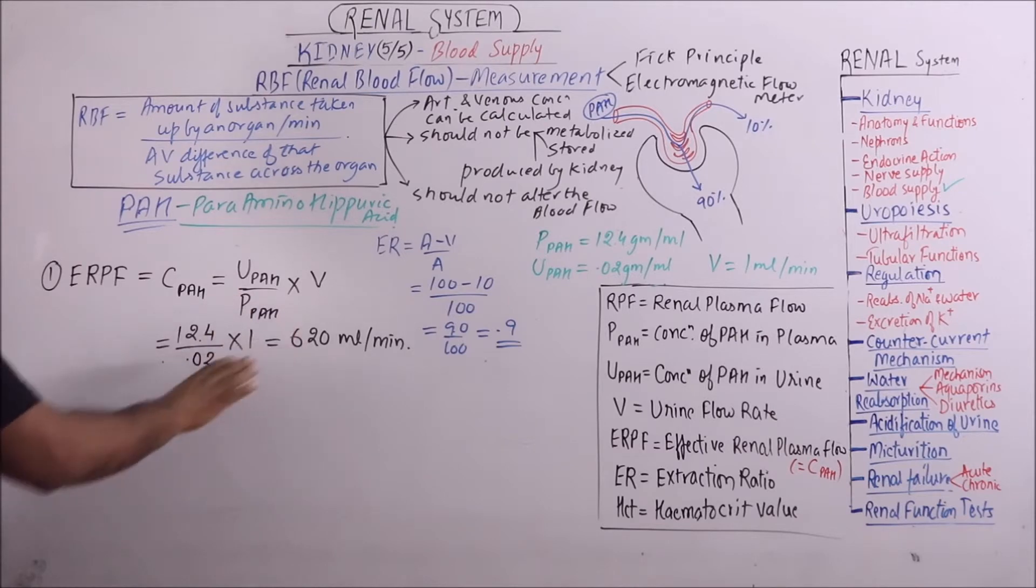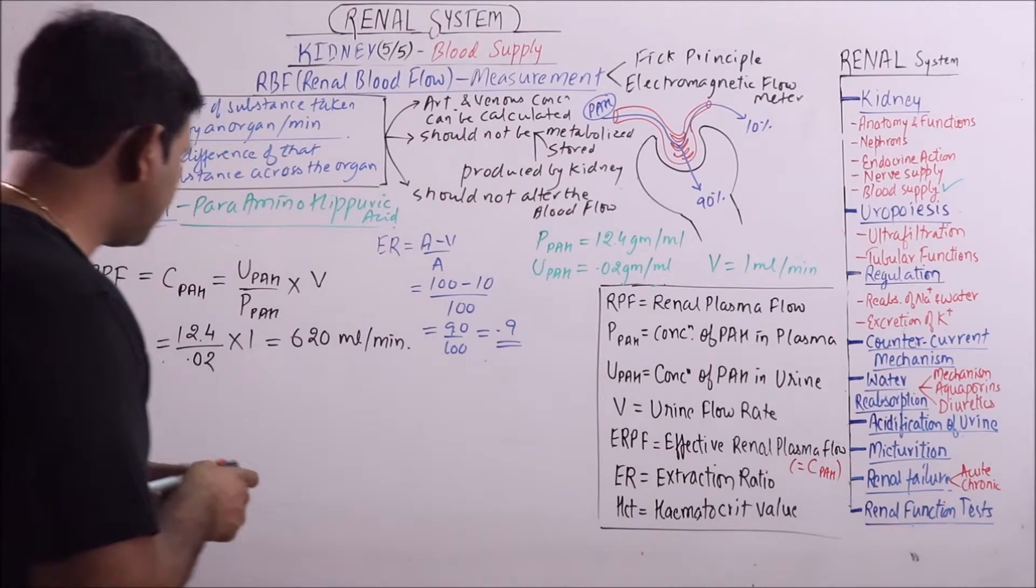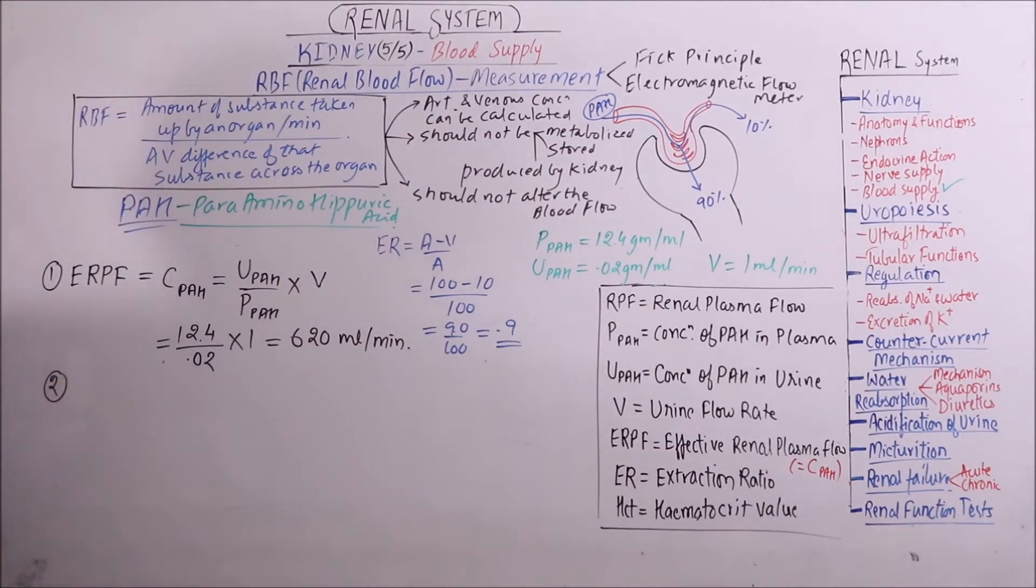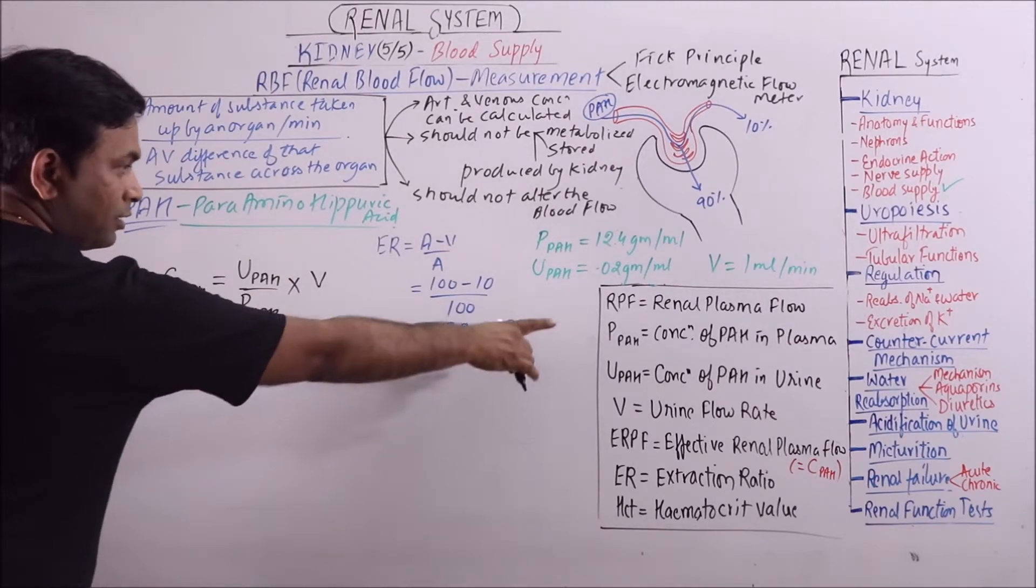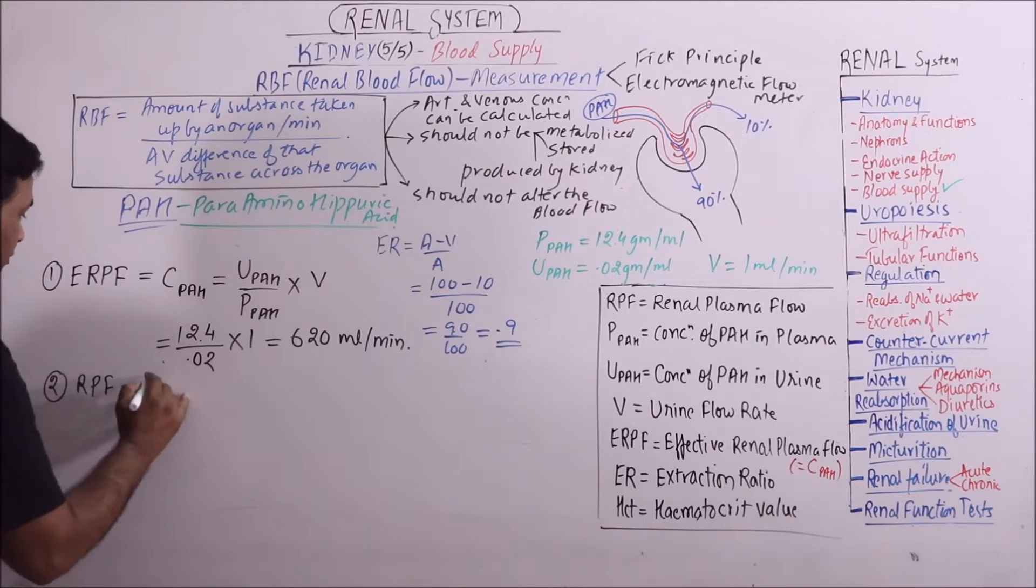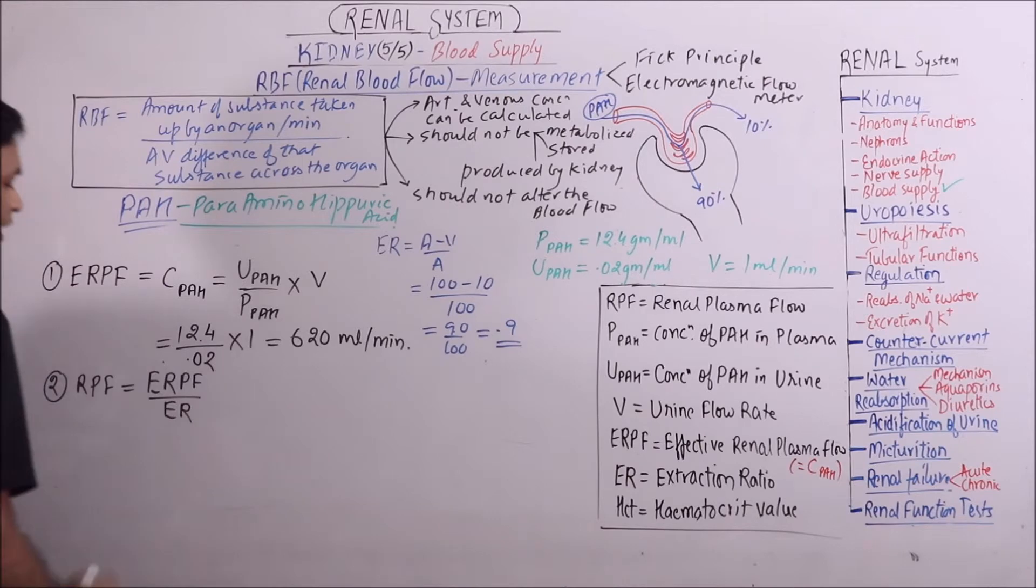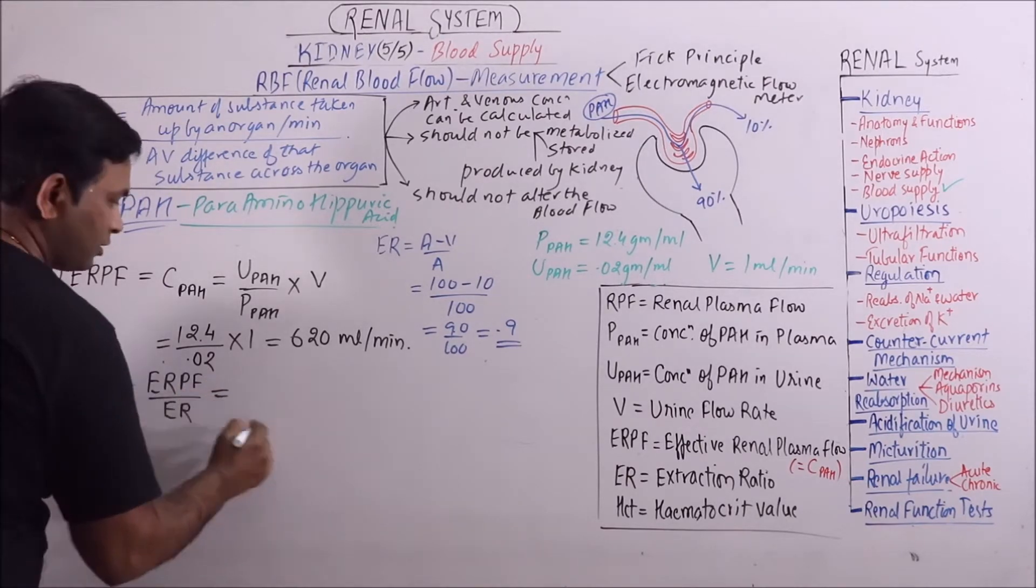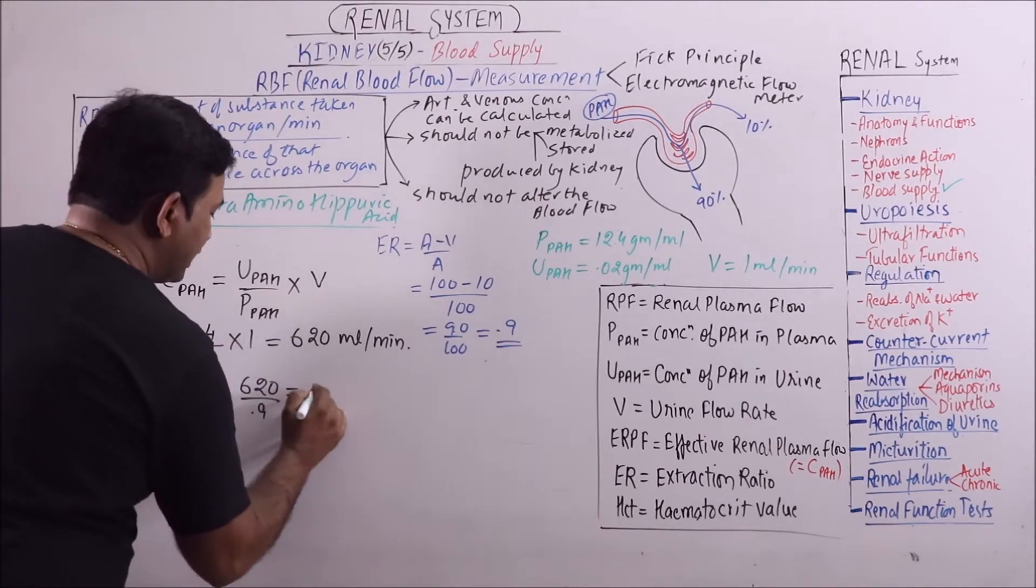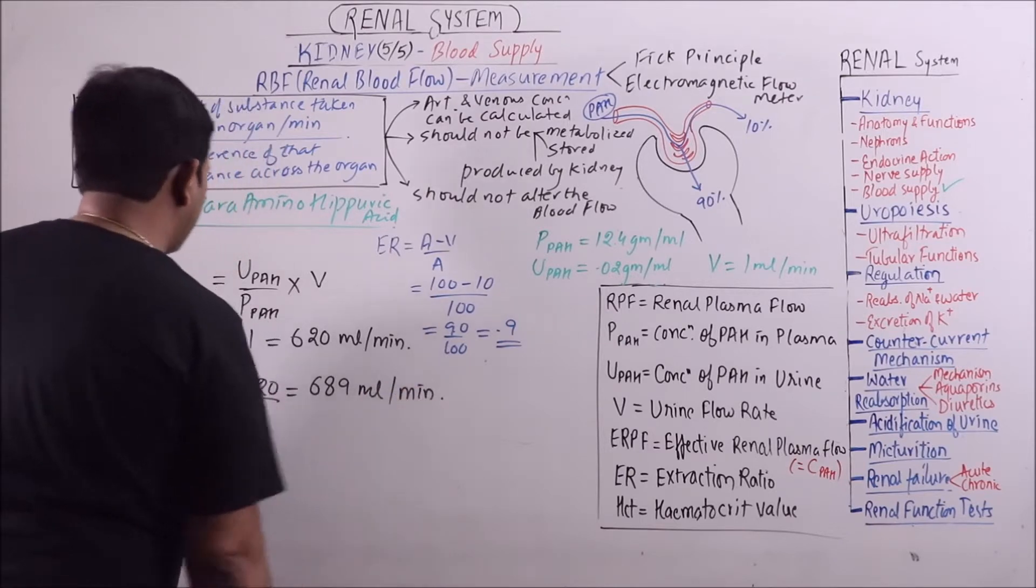But this value is according to 90% filtration, not 100%. So this value should be adjusted according to 100%. For that, the RPF will become ERPF upon extraction ratio. So we will place 620 upon 0.9, and that will come to be 689 ml per minute.